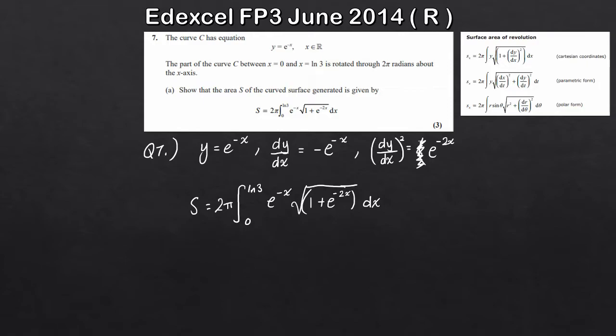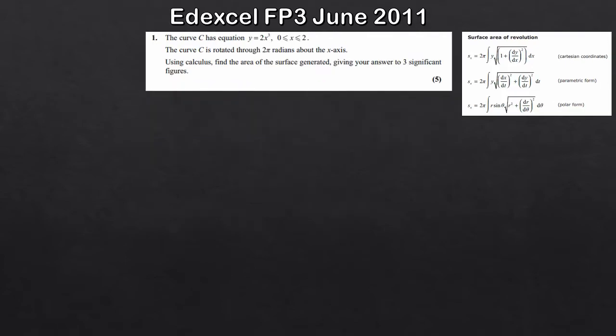For this question we're not actually calculating the area — just showing the working to arrive at the curved surface area formula. That's the first question done. The next question: we've got a curve C with equation y = 2x³, rotated through 2π radians about the x-axis. We need to give the answer to three significant figures. Again, identify whether we're working with Cartesian, parametric, or polar — in this case, Cartesian again.